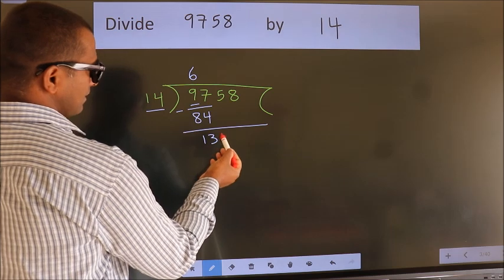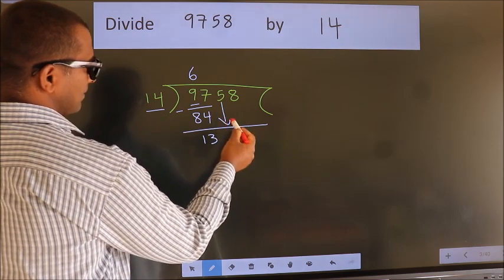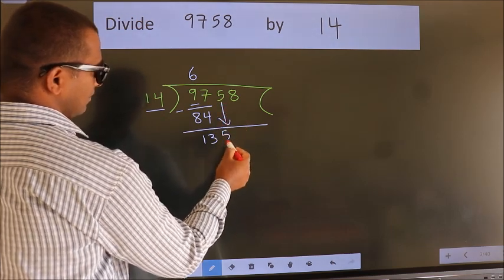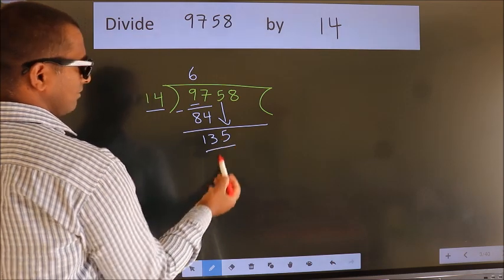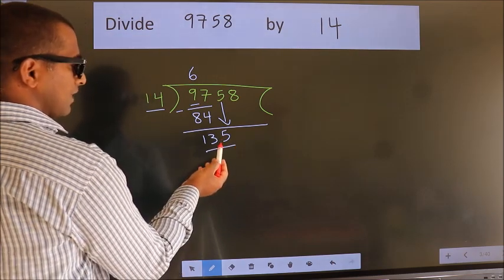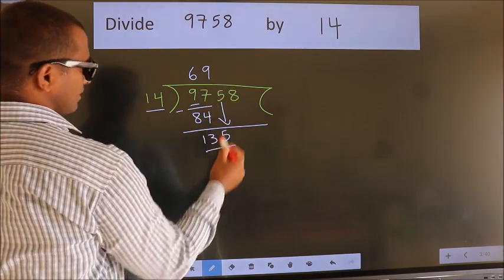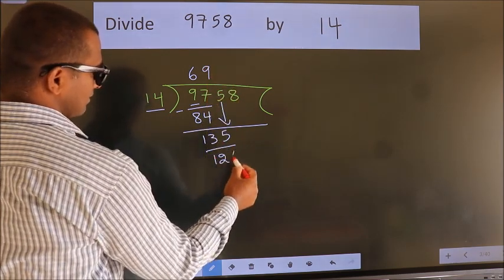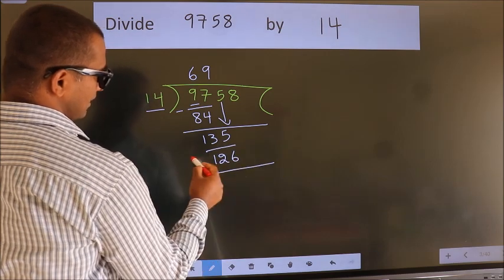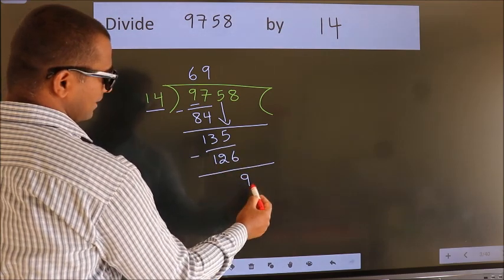After this, bring down the next number. So 5 down. So 135. A number close to 135 in the 14 table is 14 times 9 equals 126. Now we subtract. We get 9.